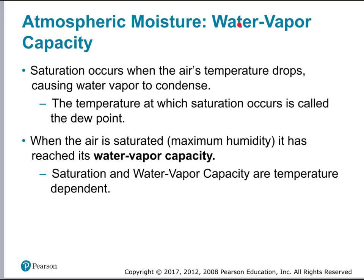Water vapor capacity refers to the maximum amount of water vapor the air can hold, and that maximum value depends on temperature. Imagine air that's not completely saturated but pretty close, and then the temperature drops. As temperature drops, the air can hold less and less water. If the temperature drops enough, the amount of water in the air exceeds what it can hold — saturation is reached and water condenses out.